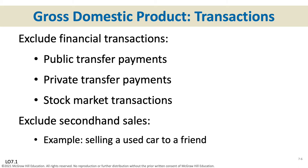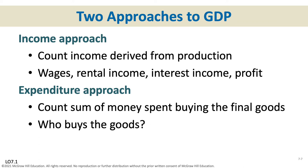Stock market transactions also don't count — nothing is produced when you buy a share of stock. It gives you part ownership of a company, but nothing was actually produced. Secondhand sales don't count either: if a truck was already counted in the year it was produced, selling it from one person to another doesn't mean anything new was produced. If you buy items at a garage sale, none of that counts in GDP because nothing new was produced.